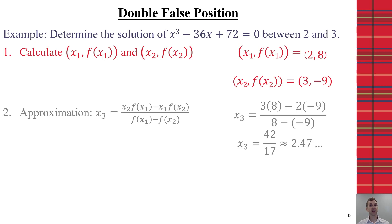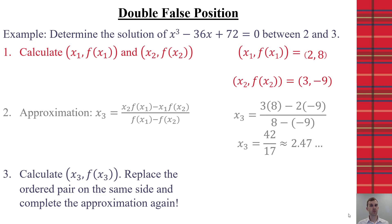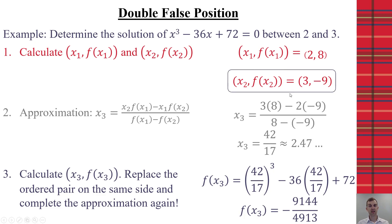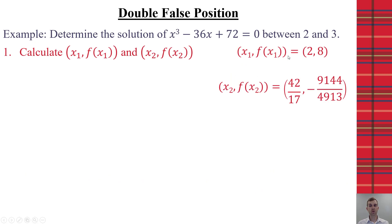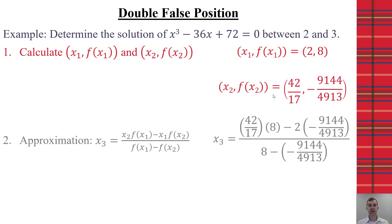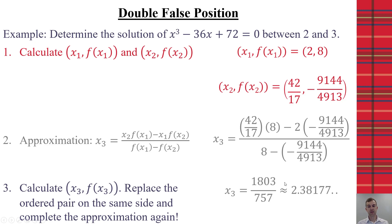For a second iteration, we substitute 42/17 into the equation and find its corresponding value is approximately −9,144/49. Since this is negative, we replace the second ordered pair with this fractional one, keeping one value on the positive side and one on the negative side. Substituting these new ordered pairs into the formula and simplifying gives 1,803/757, approximately 2.38 — much closer to the actual solution. We can continue iterating, substituting each new approximation back in and replacing the appropriate pair, to get better and better approximations.